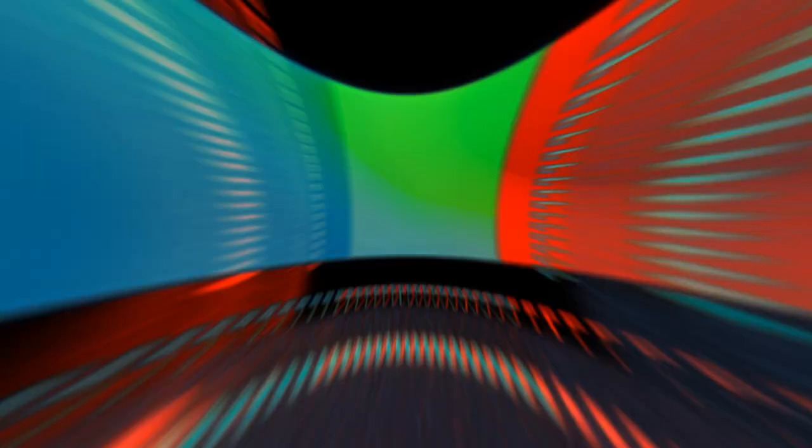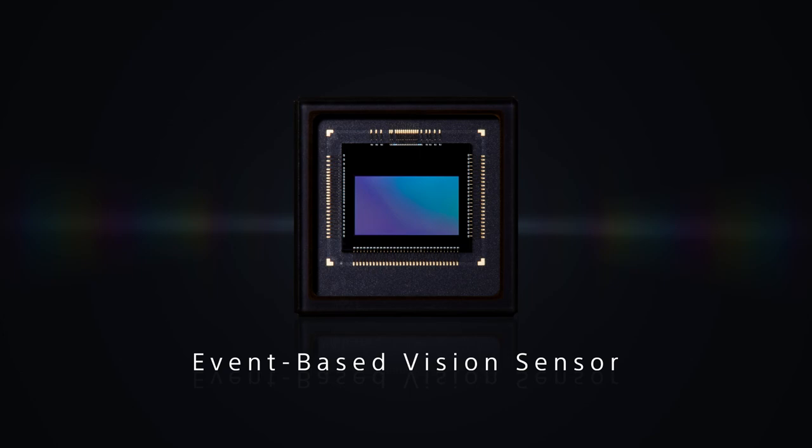A new type of machine eye that realizes rapid and large-scale information processing. That's Sony's EVS, event-based vision sensor.